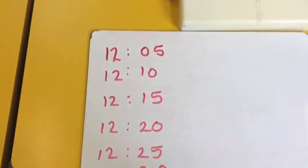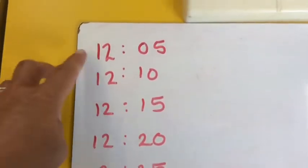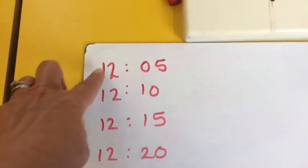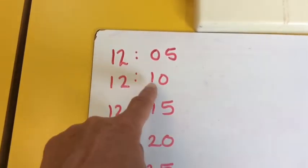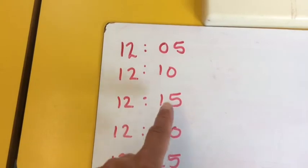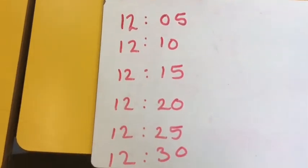And we can write that digitally as well. So 5 past 12 is 12:05, 5 minutes have gone past 12 o'clock. 10 past 12, we write as 12:10. 12:15 is quarter past 12, and so on.